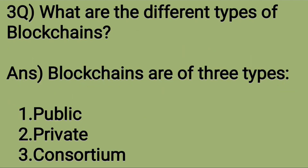What are the different types of blockchains? Blockchains are of three types: public, private, and consortium.